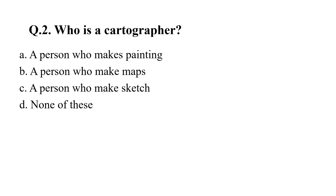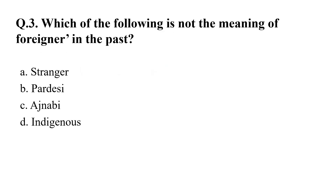Your second question is: who is a cartographer? Your options are: A. A person who makes paintings, B. A person who makes maps, C. A person who makes sketches, D. None of these. And your right answer is Option B: a person who makes maps.